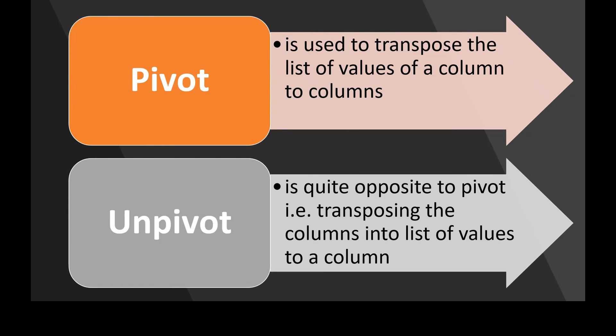First let us understand the functionality of these functions. Pivot is used to transpose the list of values from a column into columns. For example, if there is a dataframe containing millions of records with an employee gender column, the gender column will contain values like male or female. Instead of keeping these as row values, you can convert them into separate columns — one female column and one male column. That is a standard example for pivot.